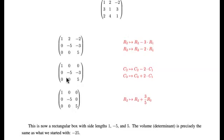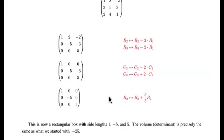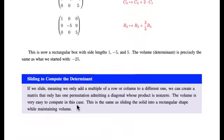So if you just slide into a diagonal by doing some row and column operations, we can see the determinant very easily, just right there.